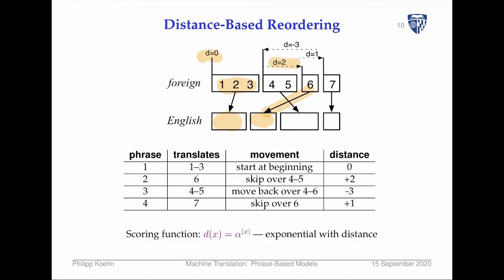Next we jump two words forward — this distance of two is indicated. Then we make up for it by going back three steps. This is influenced by how much we jumped earlier and also how long the phrase is. So this gives a distance of minus three. Finally we're at the last phrase, jumping exactly one word — so no movement there.